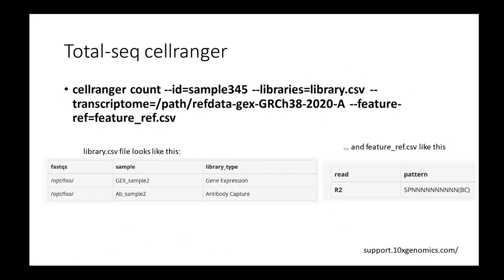At the end, how you do this in Cell Ranger is similar to before. You specify a CSV file that has information about where to find the FASTQ files for gene expression and for antibody capture. You also need to specify a CSV file with a reference for the antibody tag pattern, which depends on the technology used, plus the path to the reference transcriptome.